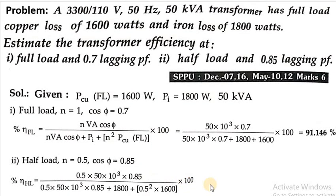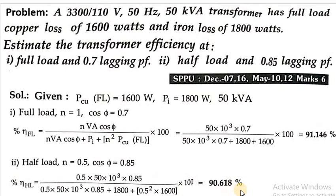So see, these kinds of numericals are very simple. You have to use only one formula: (n × VA × cos φ) divided by (n × VA × cos φ + P_i + n² × P_cu(FL)) times 100. By using only one formula, we solved both conditions: efficiency at full load and efficiency at half load with different power factors. These kinds of numericals are of 6 marks: 3 marks for the first part and 3 marks for the second part. You can easily calculate these kinds of numericals.